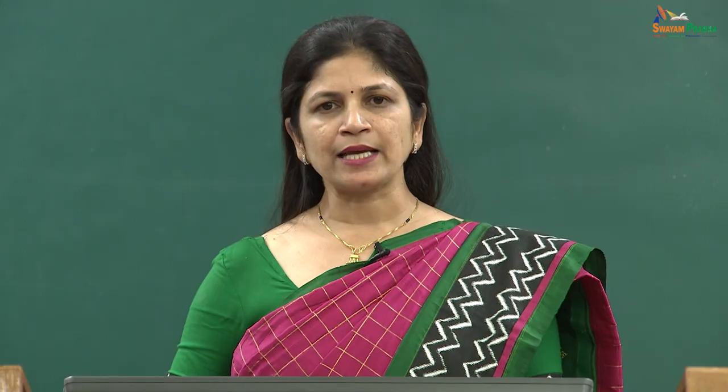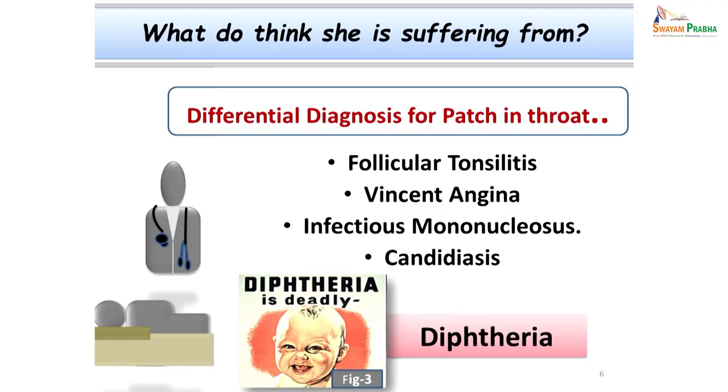With this history we diagnosed a case of diphtheria. However, before making such a diagnosis it is important to keep in mind that various other organisms can cause patches in the throat — especially Streptococcus pyogenes, which can cause tonsillitis and granular pharyngitis similarly mimicking a patch in the throat. Another important infection to consider is Vincent's angina, caused by anaerobic as well as spirochete organisms. Infectious mononucleosis and candidiasis are yet other common infections which could mimic the similar condition as seen in Miss Usha.